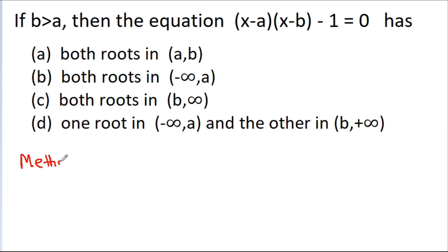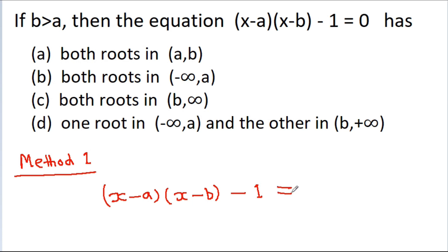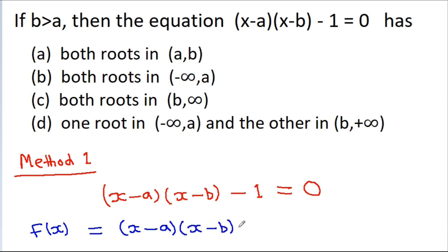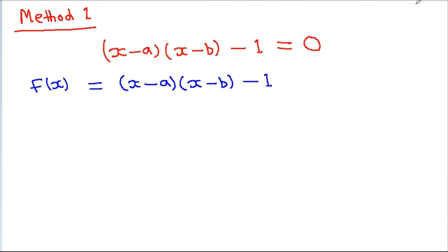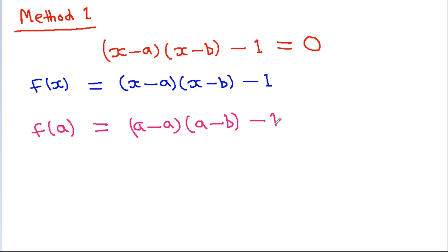Method one is the graphical method. Here we have (x-a)(x-b) minus 1 is equal to 0. If we take f(x) equal to (x-a)(x-b) minus 1, then in each option we have either a or b. If we find f(a), then f(a) will be (a-a)(a-b) minus 1, which equals minus 1, and minus 1 is negative.